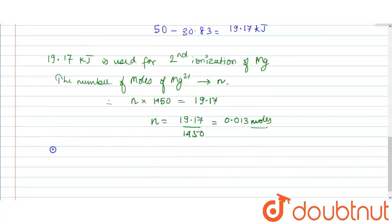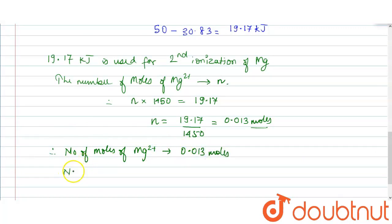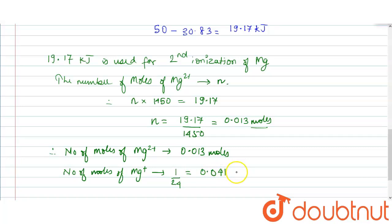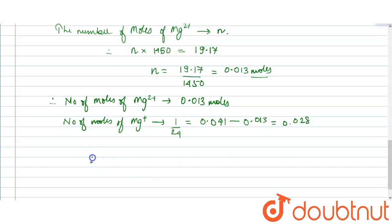The number of moles of Mg⁺ = total moles − moles of Mg²⁺ = 0.041 − 0.013 = 0.028 moles. Percent of Mg⁺ = (0.028 ÷ 0.041) × 100 = 69.9%.